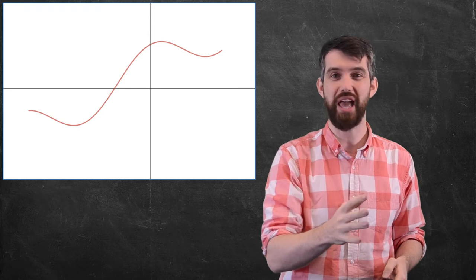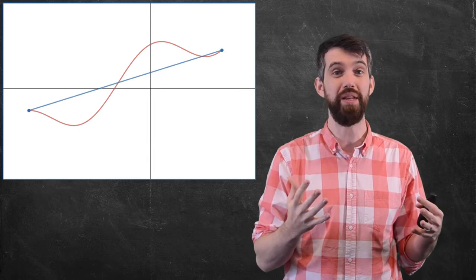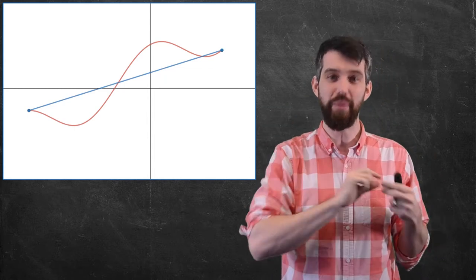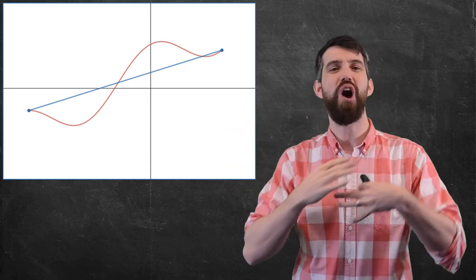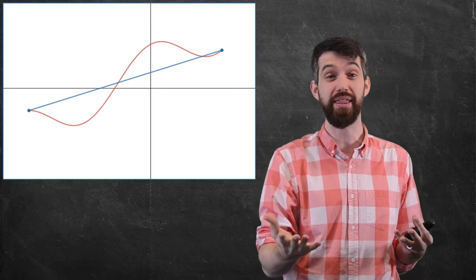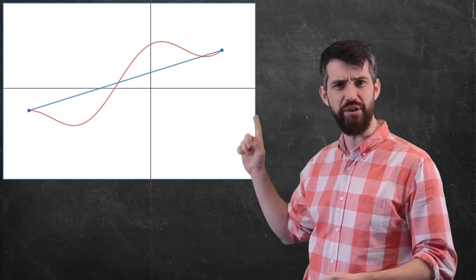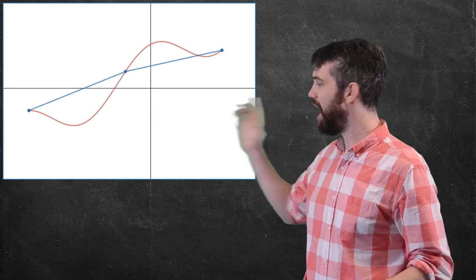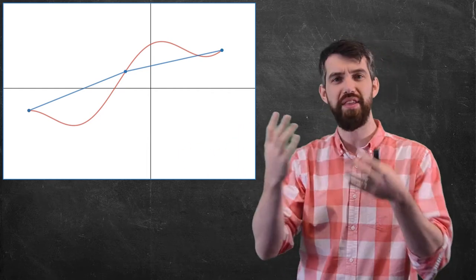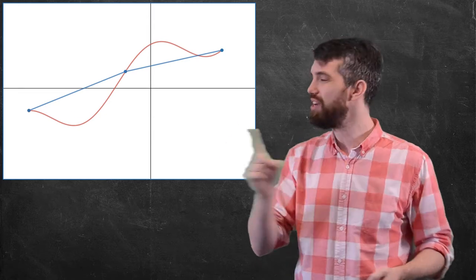Now, one approximation that I could do, a bad approximation but nonetheless an approximation, would be to say I can create a secant line that starts at the same spot and ends at the same spot but is otherwise straight. This secant line is not that great of an approximation, but I can compute it. I know how to figure out the length of a line just by Pythagoras. What if instead of going from the start to the finish, I broke it up into two different lines, one from the left to the midpoint, and the other from the midpoint to the right-hand side. Still not that great. But look what happens if I do three.